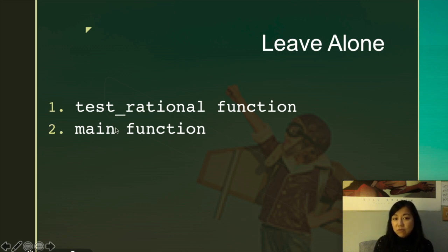So leave anything that's related to test_rational alone and anything that's in main function alone. If you want to, you can comment out certain things when you are testing different parts of your class, the implementation and the declaration to test your code. But at the end, I want the main function to be exactly the same, like when I have given it to you.